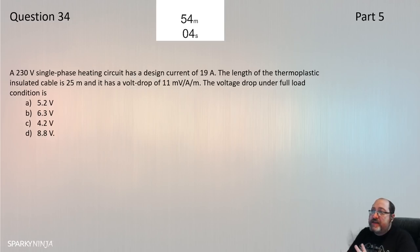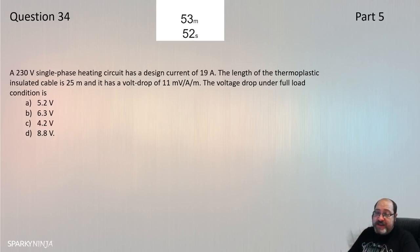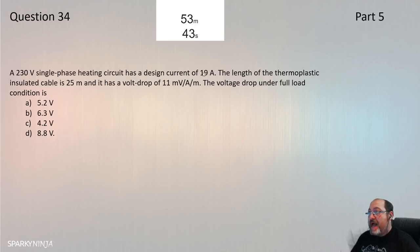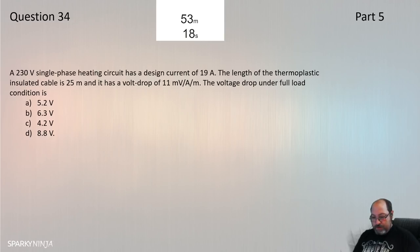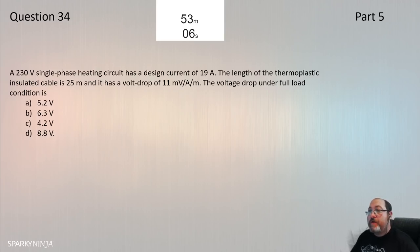Question 34: A 230V single phase heating circuit has a design current of 19A. The cable length is 25m and has a volt drop of 11 mV/A/m. The voltage drop under full load is: 11 × 19 × 25 = 5225 mV ÷ 1000 = 5.225V, approximately 5.2V. Question 34 is A.